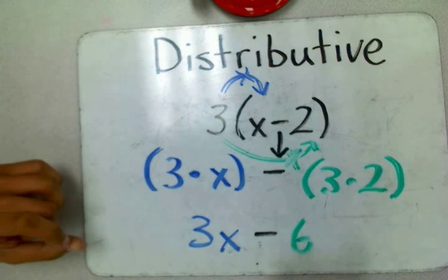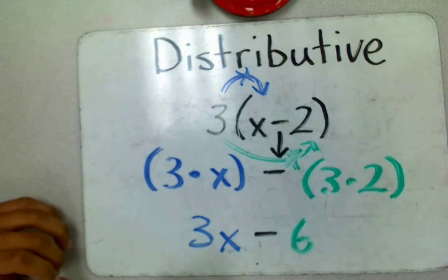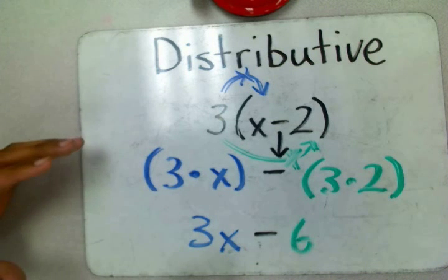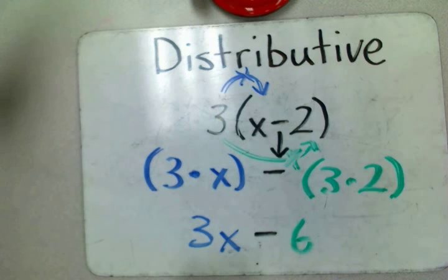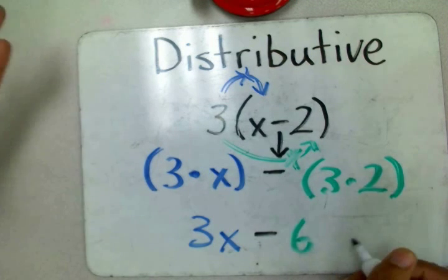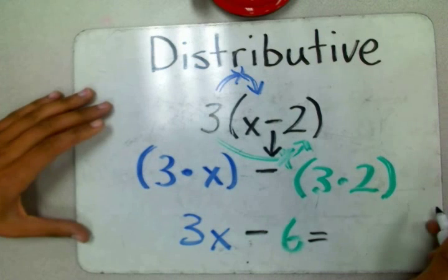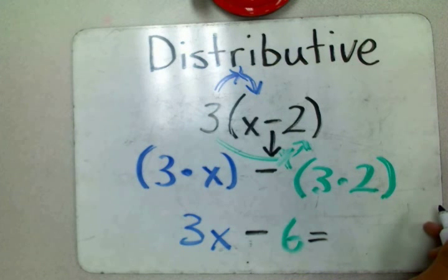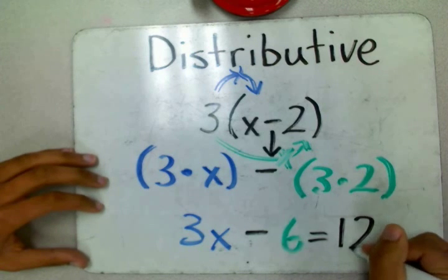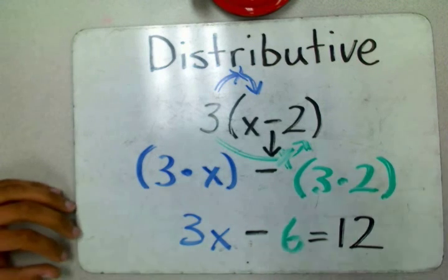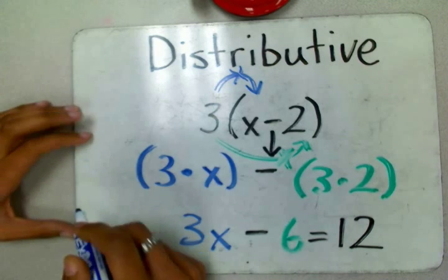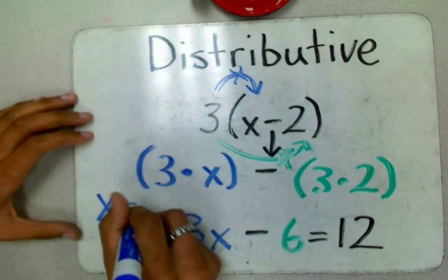But you might be saying to yourself, this is not an answer, there's still a variable there! No problem. If you want to find out what X is, let me make it into an equation you can solve yourself. There you have it: 3X minus 6 equals 12. I'll give you learning earnings money if you find out what X is. You have to do the inverse operation.